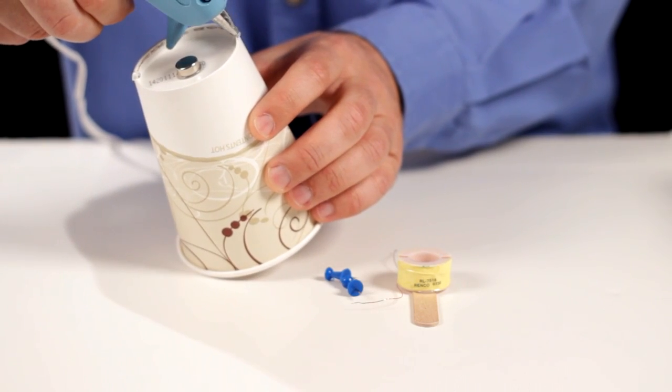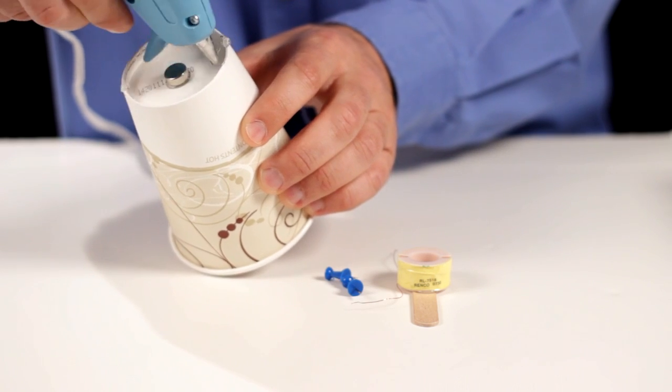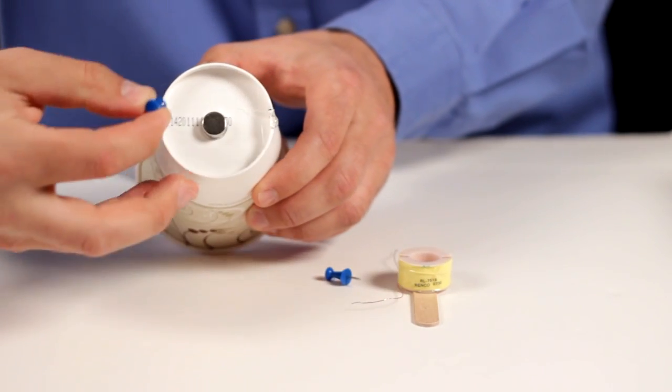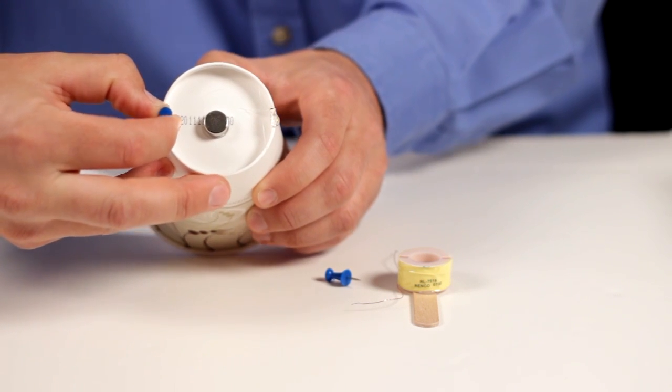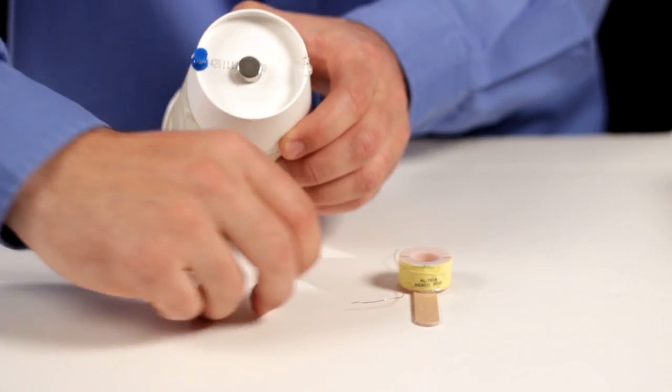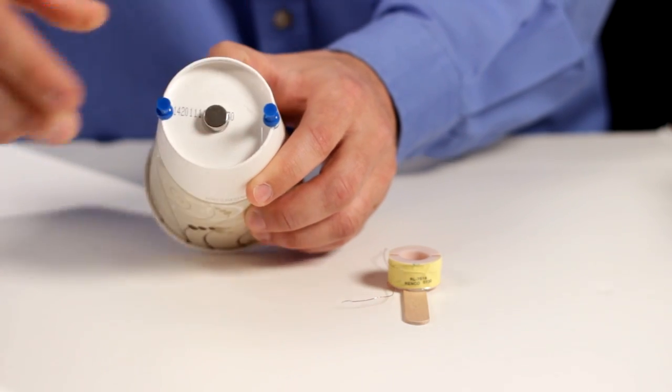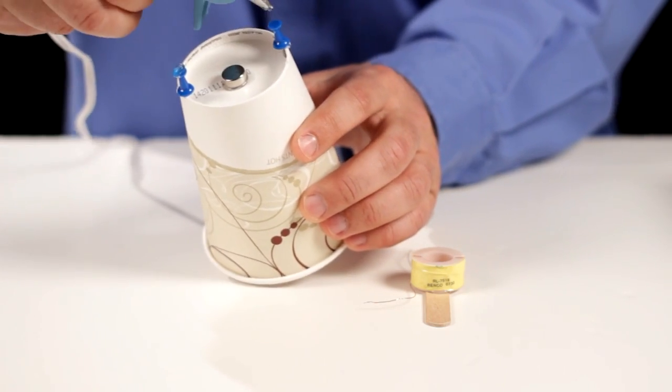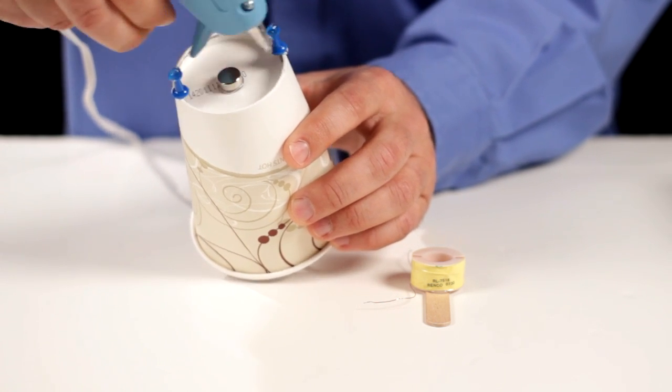Then I glued two standoffs, in this case they're push pins, on opposite ends of the bottom of the cup. And then I glued the popsicle stick to the standoffs such that the air core solenoid was just over the magnet.